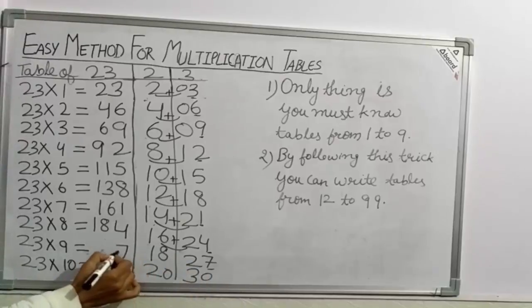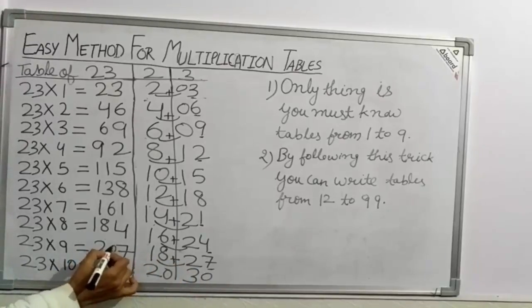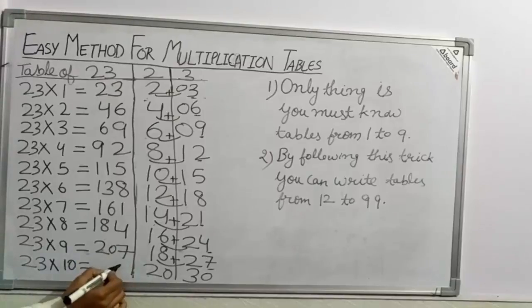Now take 7 as it is. 18 plus 2 is 20. 23×9 = 207. Now take 0 as it is. 20 plus 3 is 23. 23×10 = 230.